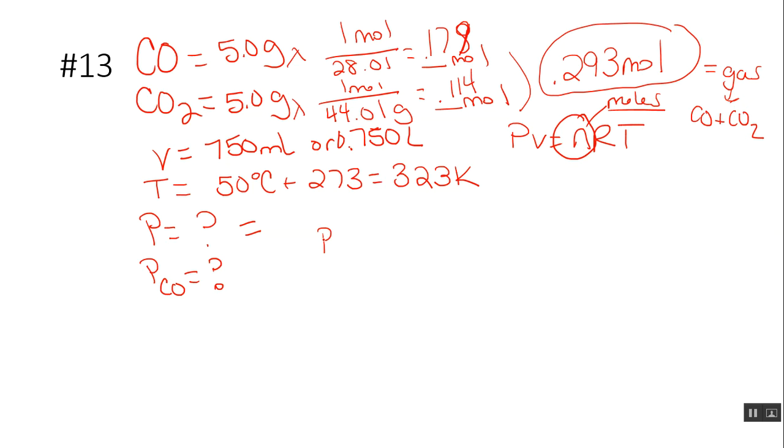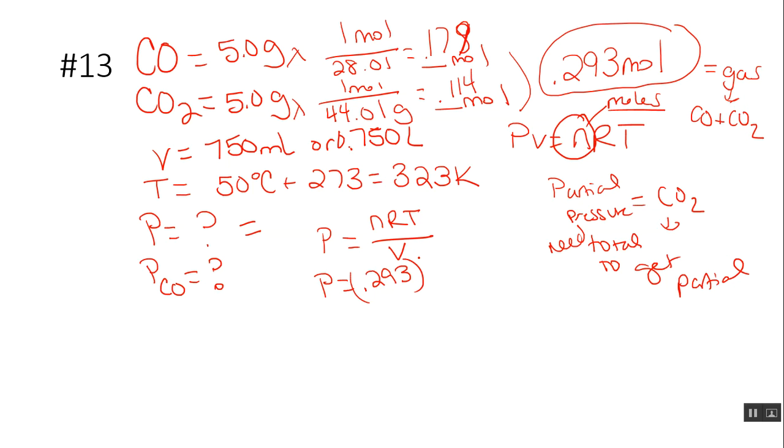We've got our ideal gas law, which is now solving for pressure because we don't know pressure. It's asking us for actually the partial pressure, but we can't know partial pressure. It's asking us for the pressure of CO2, but we have to know the total. Need total to get partial. So what do we know? We know our moles of our gas is 0.293. We know our ideal gas constant, 0.0821. And our temperature, which is 323 Kelvin. And we know our volume, 0.750 liters. So those are all things that we know in this problem.